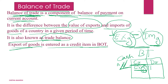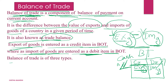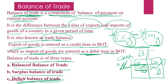What goes out should be entered under the debit side, so you have to be very conscious. Import of goods are entered as a debit item in the balance of trade. Balance of trade has three types: one is balanced balance of trade, one is surplus balance of trade, and another one is deficit balance of trade.